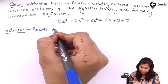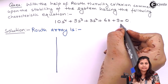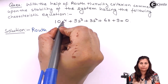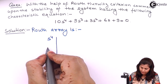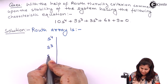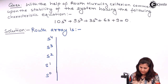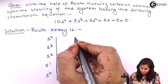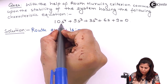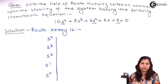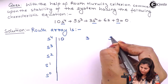The highest power of s in this characteristic equation is s to the power 4, which is an even power. So we write s^4, then s^3, then s^2, then s^1, and then s^0. For the coefficients, we start with the even powers: the coefficient of s^4 is 10, the coefficient of s^2 is 3, and the coefficient of s^0 is 9.